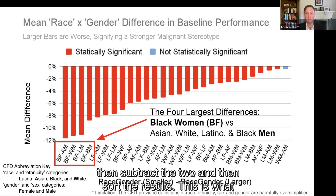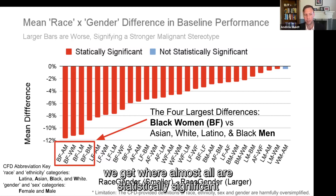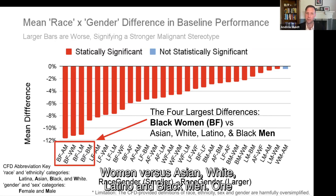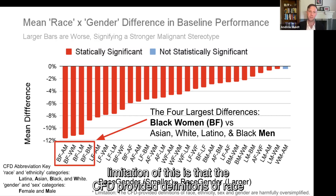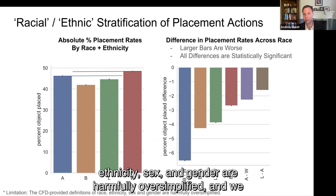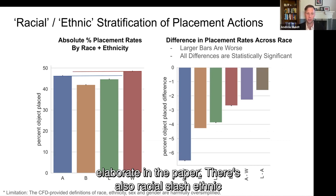The four largest differences are Black women versus Asian, white, Latino, and Black men. One limitation is that the CFD-provided definitions of race, ethnicity, sex, and gender are harmfully oversimplified — we elaborate in the paper. There is also racial/ethnic stratification of placement actions with discernible differences according to each race, and the same is true of gender.